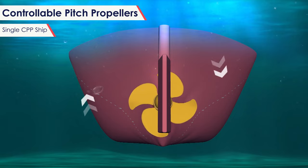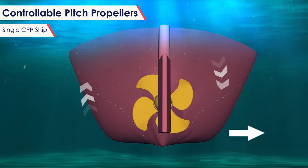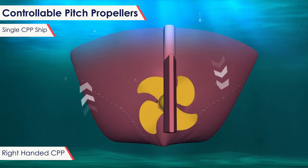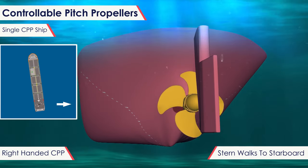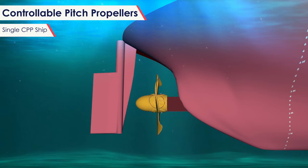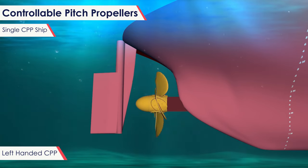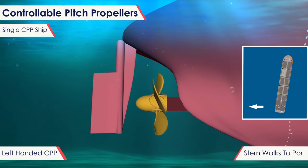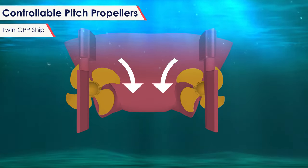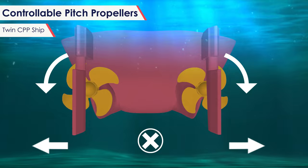On a single CPP ship, the propeller always turns in the same direction and therefore transverse thrust is constant whether the propeller is going ahead or astern. On a right-handed CPP, for both ahead and astern engine movements, the stern walks to starboard. Even at zero pitch, the propeller continues to rotate, so she will have a stern walk. On a left-hand CPP, for both ahead and astern engine movements, the stern will walk to port. On a twin CPP ship, with either inward or outward turning CPPs, transverse thrust will cancel each other even when the engines are split.